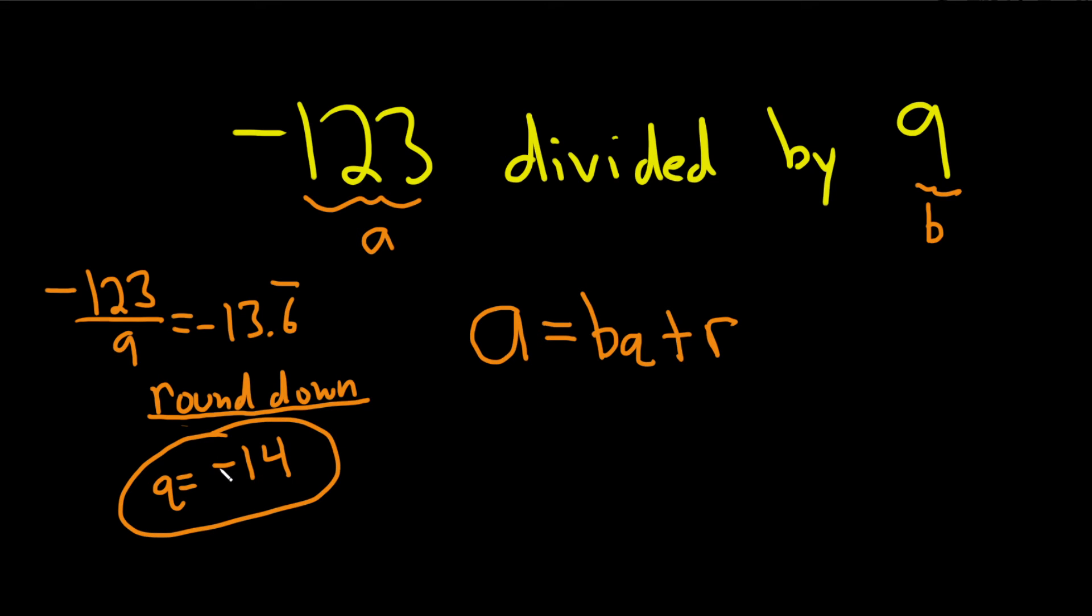To find the remainder, take all your variables and plug them into the formula. A is negative 123, B is 9, and our quotient is negative 14, plus R.